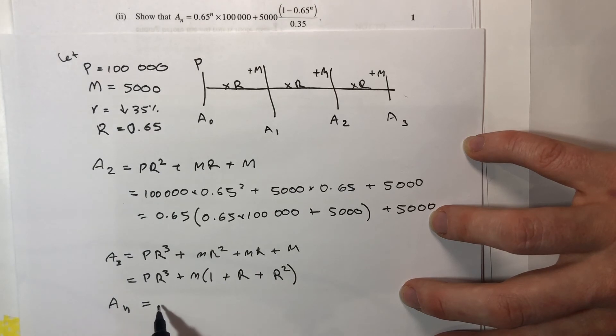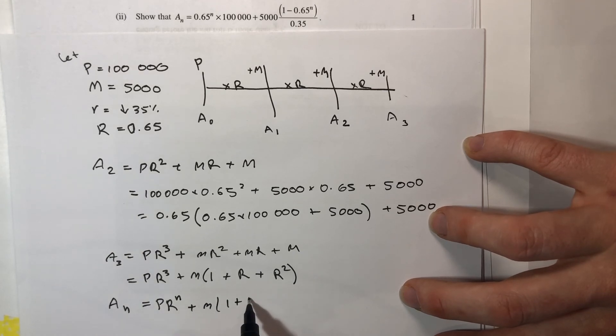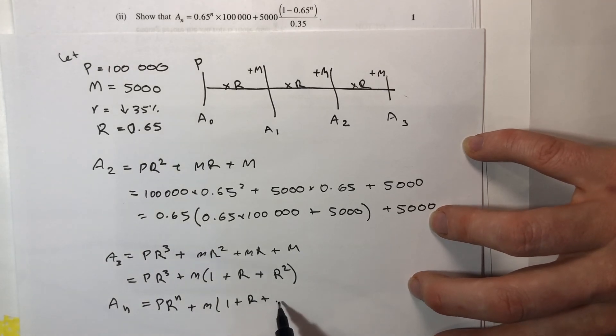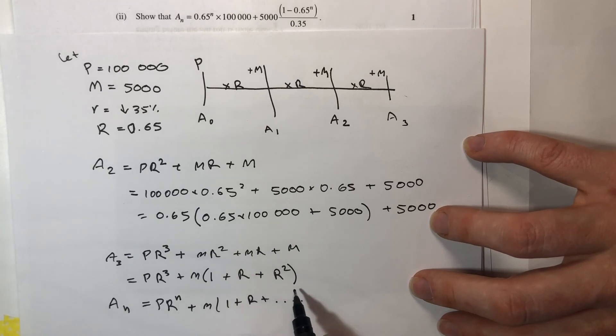So AN instead of having three terms, we'll have N terms, that would be PR to the N because we'd moved that far along. The series would start the same way, that's the other reason for rearranging it, is so I can see my series grow.